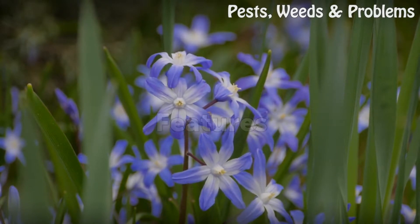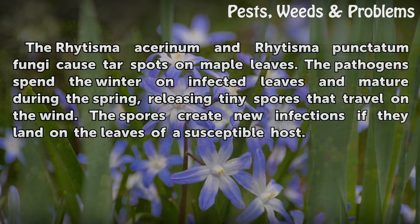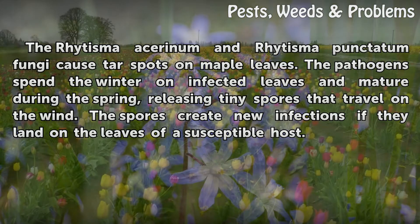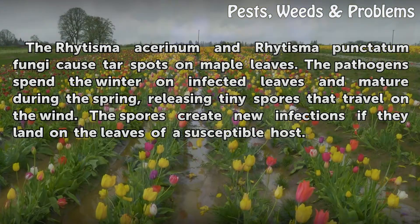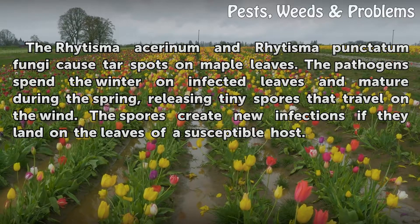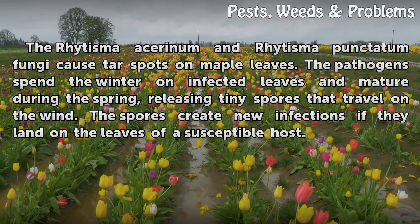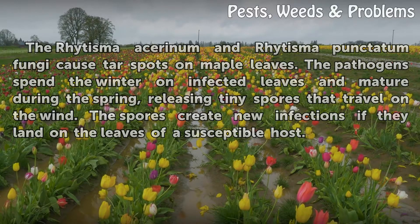Features: The Rhytisma acerinum and Rhytisma punctatum fungi cause tar spots on maple leaves. The pathogens spend the winter on infected leaves and mature during the spring, releasing tiny spores that travel on the wind. The spores create new infections if they land on the leaves of a susceptible host.